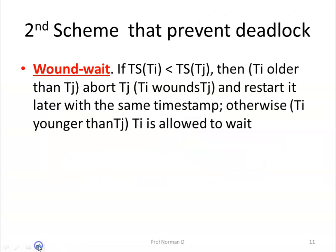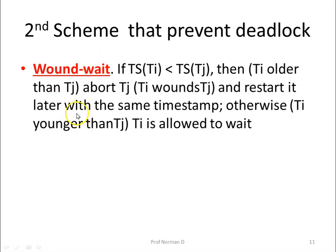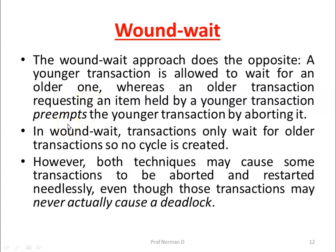The second scheme is Wound-Wait. The Wound-Wait approach does exactly the opposite of Wait-Die. A younger transaction is allowed to wait for an older one, whereas an older transaction requesting an item held by a younger transaction will preempt the younger transaction by aborting it. In Wound-Wait, transactions only wait for older transactions, so since it is waiting only for older transactions, a cycle will never be created.